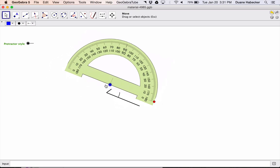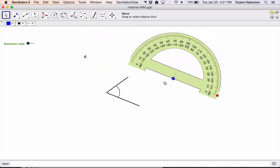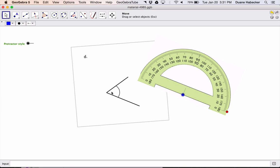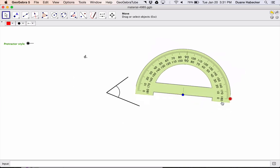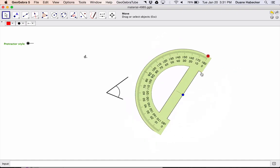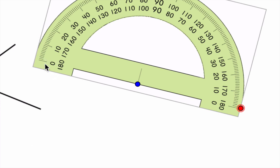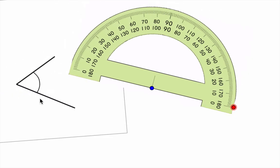The other thing is, we want to point out that when we put this protractor on the angle to measure it, we want this target, I colored it blue, to go directly on the corner of the angle, or the vertex of the angle. And then we want to rotate the protractor so that the zero, and most protractors have a zero on both ends, so that the zero is lined up on one of the legs of the angle.